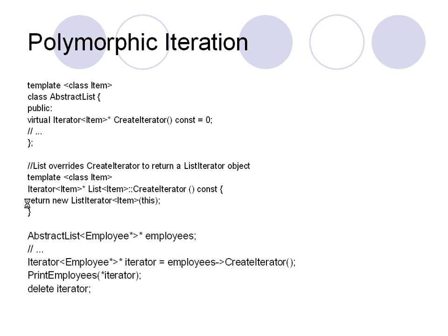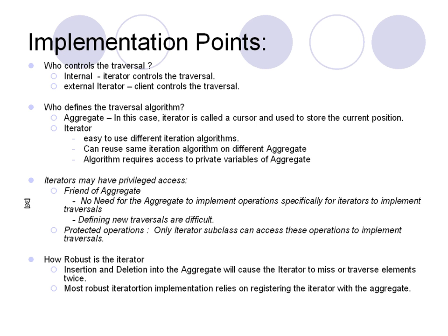Here is code that implements polymorphic iteration. We have an abstract list with a virtual create iterator function. The list class inherits from abstract list and implements create iterator, returning an instance of list iterator. We create an employee object of type abstract list, and when we assign it to a list and call create iterator, the C++ compiler takes care of calling the proper create function, invoking the create iterator of the correct list iterator.